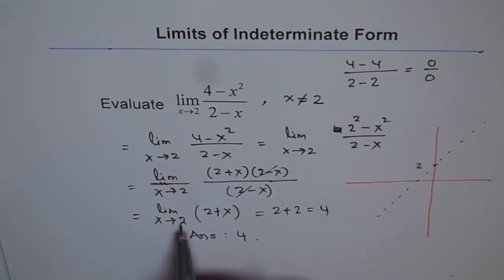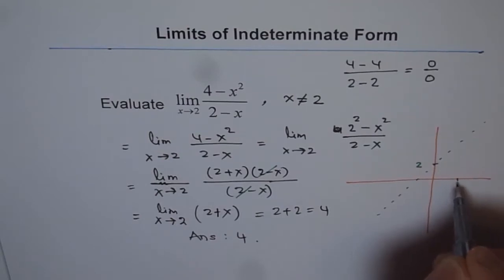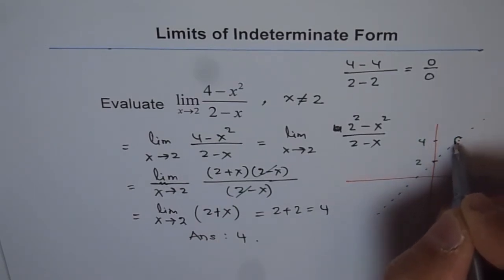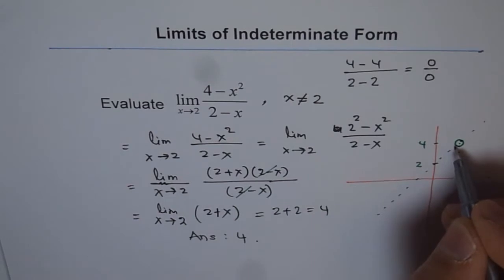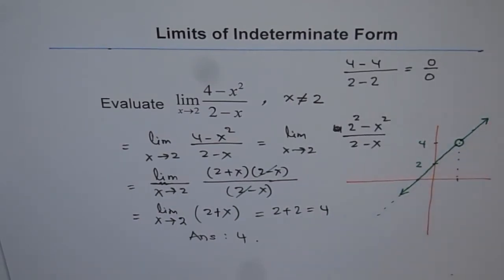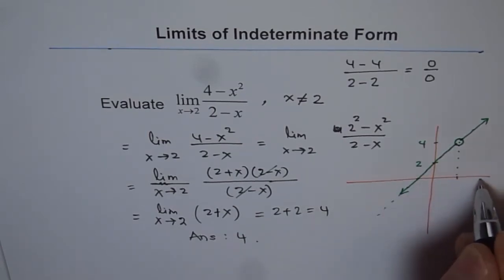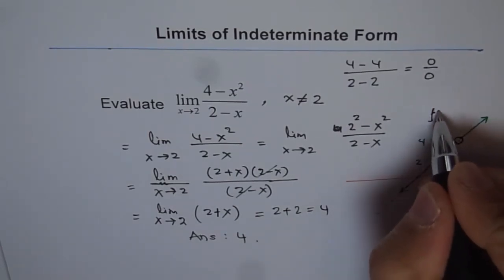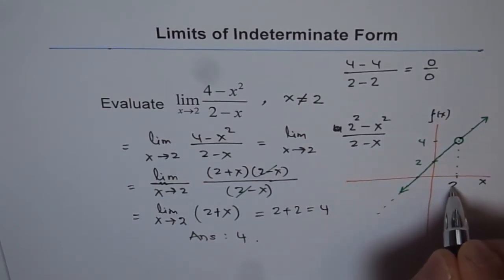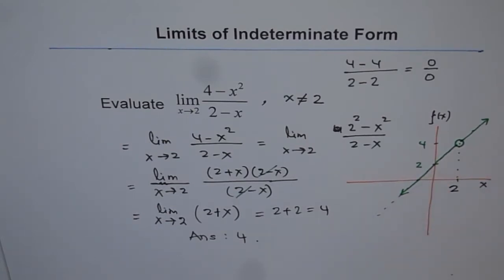And as we approach the value of 2, the function approaches 4, but function is not defined at 2. So it means as you approach this value of 2, function approaches a value which is 4, but it is not defined at this. So there is a hole there. So there is this hole and the function really is a line like this. So that is the function where x and f of x is our function with a hole at 2.